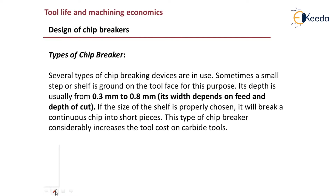There are different types of chip breakers. One type is a small step or shelf ground on the tool face. The depth is 0.3 mm to 0.8 mm, and its width depends on feed and depth of cut. If the size of the shelf is properly chosen, it will break a continuous chip into short pieces. However, this type of chip breaker considerably increases tool cost on carbide tools.